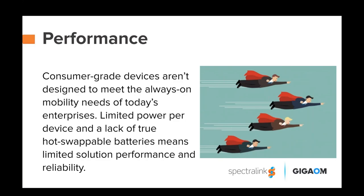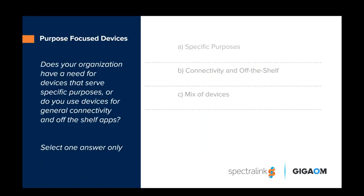The hot-swappable capability is something many haven't thought about, but it's critical when you can't wait for a device to reboot. I'd like to open another poll: does your organization have a need for devices that serve specific purposes, or do you use devices for general connectivity and off-the-shelf apps?